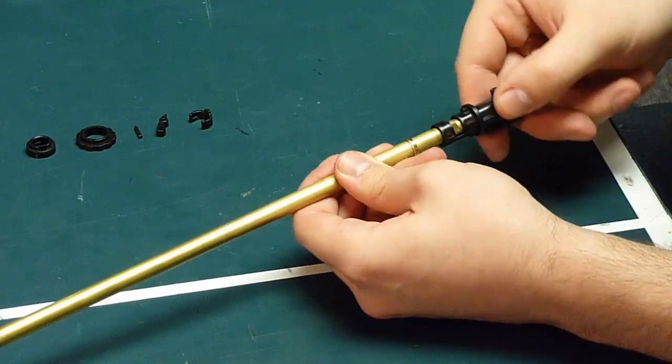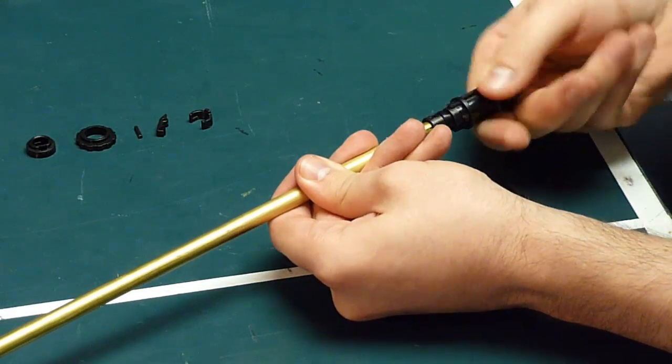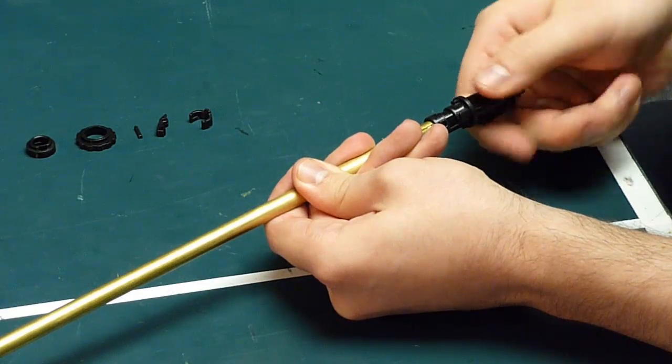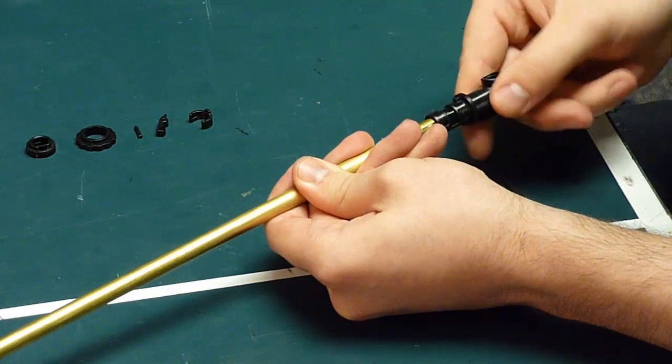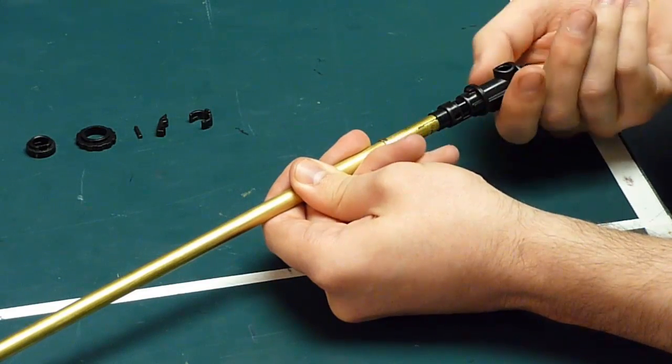So now your hop-up housing is free to be removed. Twist it again and get it over the hop-up bucking there. Make sure you don't get it caught in the groove. Once you pass that point, you can remove it fully.